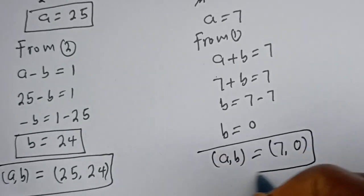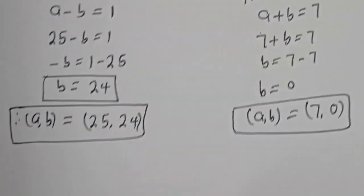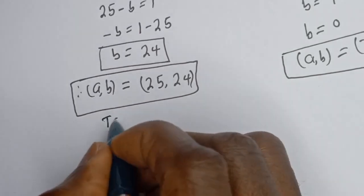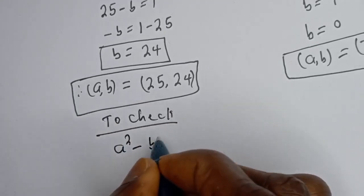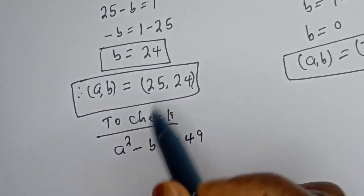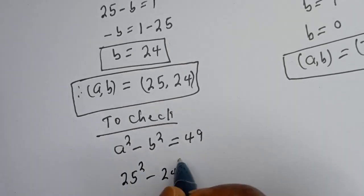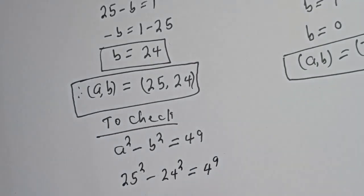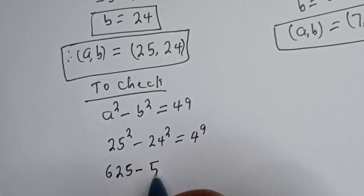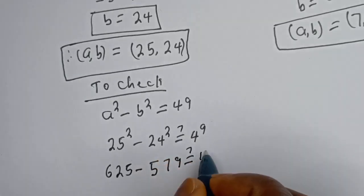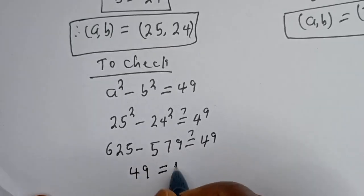Let's check if both answers are correct. For the first case, substituting A equals 25 and B equals 24 into A squared minus B squared: 25 squared is 625, minus 24 squared which is 576, gives 49. So 49 equals 49, which is true.